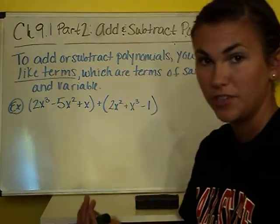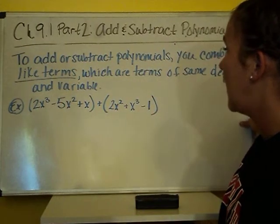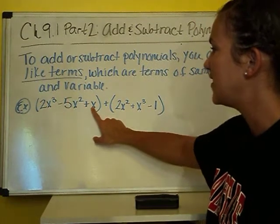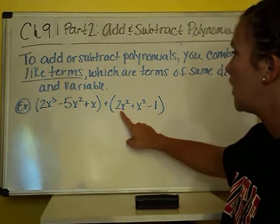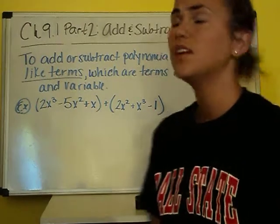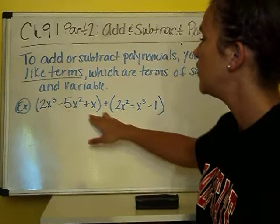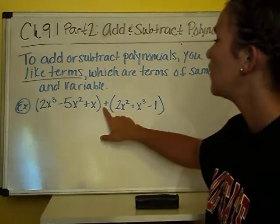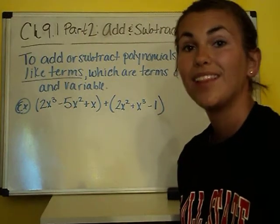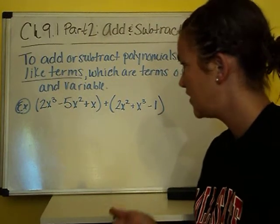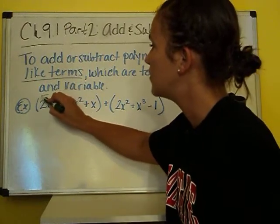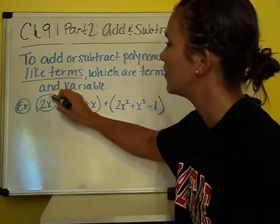We're going to jump right into examples. Here we have 2x cubed minus 5x squared plus x, plus 2x squared plus x cubed minus 1. We have 2 different polynomials and we are going to add them together. We need to look for like terms, so I'm going to start right here — we have an x cubed, 2x cubed.